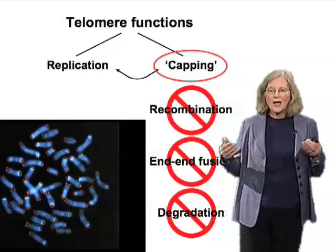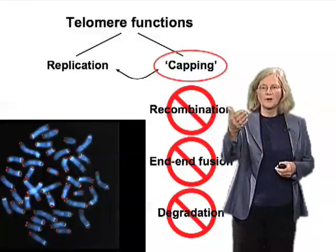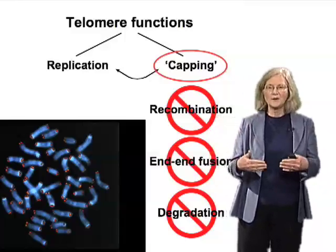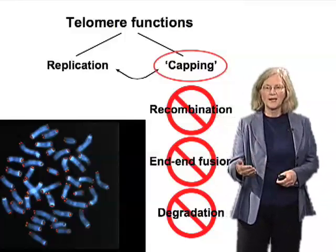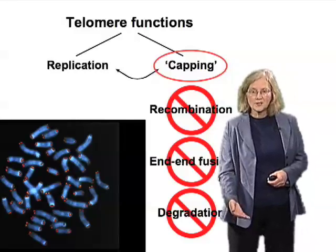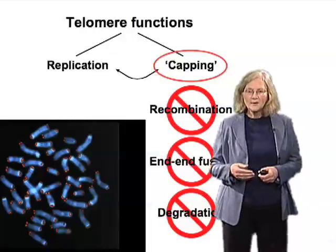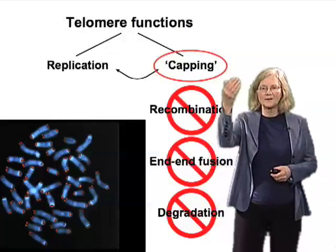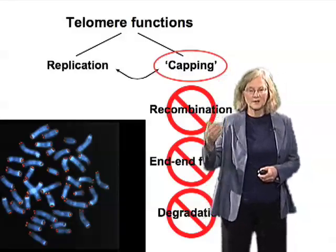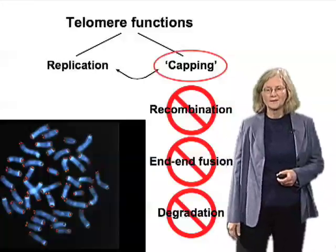If you have a break in the DNA, it can be sutured together by, for example, recombination, or the two broken ends can simply be ligated right back together by end-to-end fusions. Such DNA breaks are also subject to degradation. The telomere protects — it caps — the end of the chromosome and protects against all of these kinds of things that would normally happen to a broken DNA end.